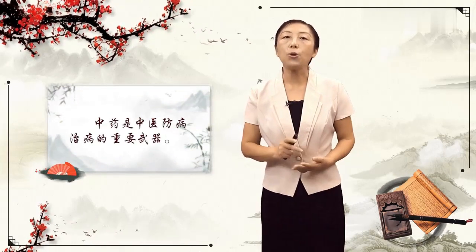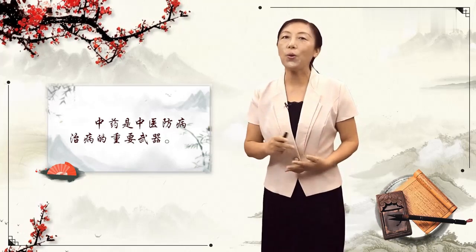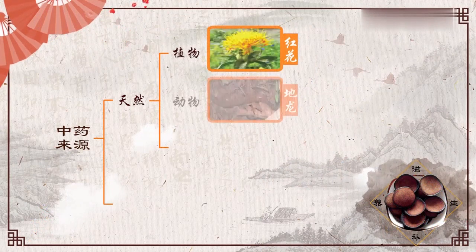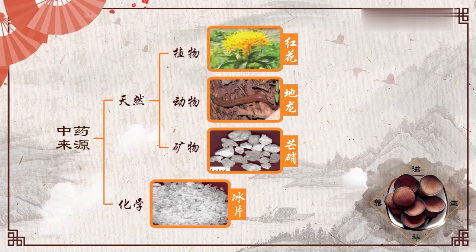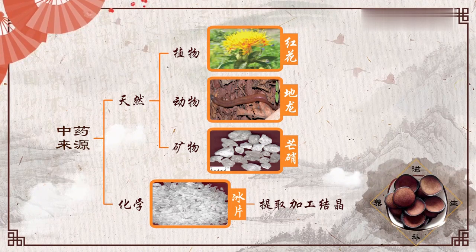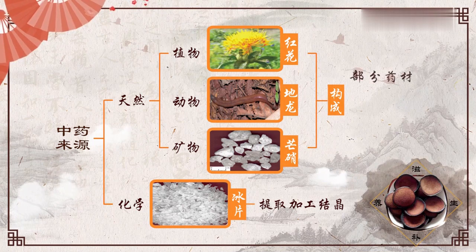中药是我们中医在临床上防病治病的重要武器，几千年来为我们中华民族的繁衍昌盛做出了卓越的贡献。关于中药的来源，主要源于天然的植物、动物、矿物，也有少部分是化学药物。那么当今中华人民共和国药典就把中药涵盖了三部分的内容：一部分是中药材，另外一部分是中药饮片，还有中成药。